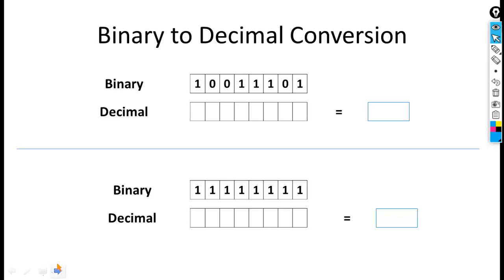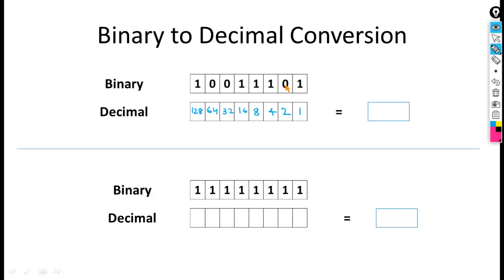Binary to decimal conversion: a binary number is written here and we have to convert it into decimal. We will start from 1 and in each subsequent box we will double the previous value. So double of 1 is 2, double of 2 is 4, then 8, 16, 32, 64, and 128. Corresponding to 0 positions, those values are crossed out and will not be included in further calculation.